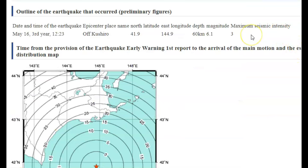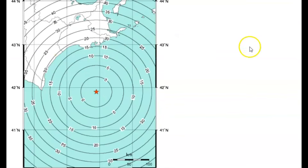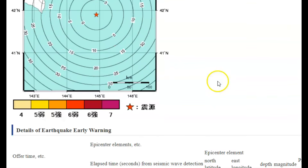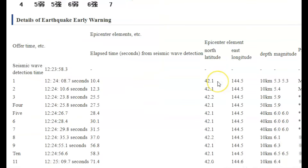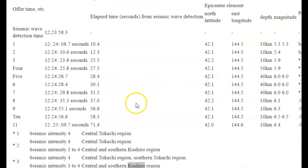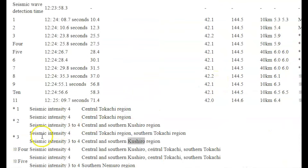It had a seismic intensity of a three, and here are the different reports of sending out alerts and how long it took for different areas to get those alerts. Originally they thought some areas might have a seismic intensity of four.